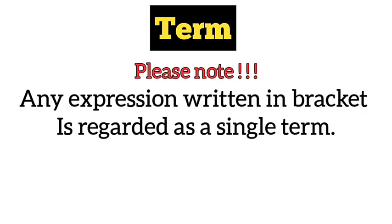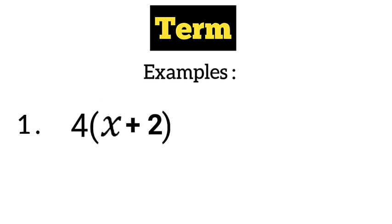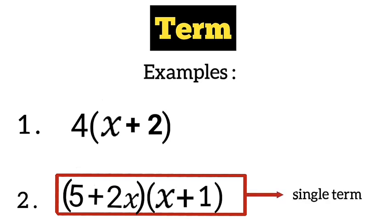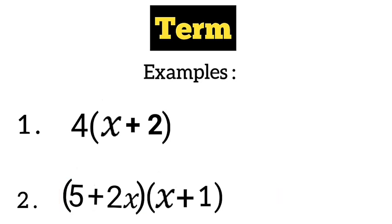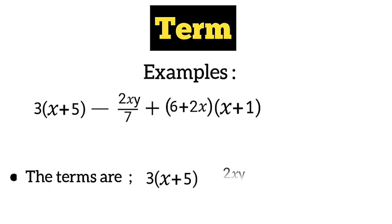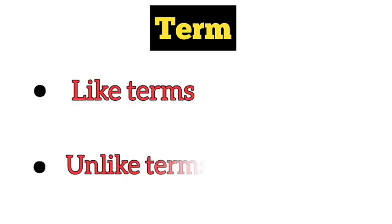Please take note: any expression written in brackets is regarded as one term. For example, 4(x + 2) is a single term, and (5 + 2x)(x + 1) is also regarded as a single term. To illustrate, in a given expression, the three terms are: 3(x + 5), 2xy over 7, and (6 + 2x)(x + 1). This clearly shows there are three terms in that expression.